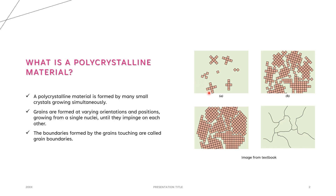The grains are formed at varying directions, as you can see here. These nuclei in the same area keep growing until they impinge on each other, and once they impinge on each other they form boundaries where the grains touch. These are called grain boundaries.